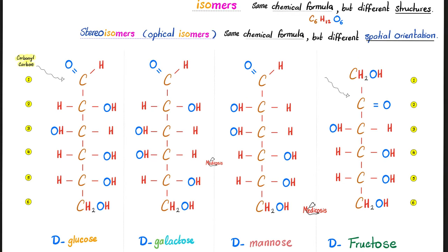Look at D-glucose: it has a CHO group — that's an aldehyde. The aldehyde group can exist on carbon number one, the first carbon in the chain. However, look at D-fructose — that's a ketone. The carbonyl with alkyl groups on both sides (R on each side) is a ketone. A ketone carbonyl can never be on the first carbon — it can be on carbon two or three, but never on the first carbon.